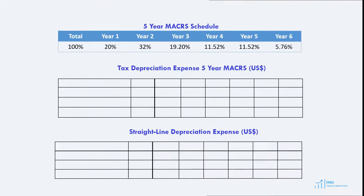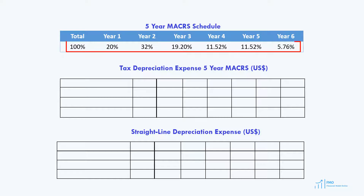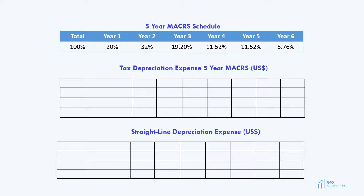Let's take a look at the 5-year MACRS schedule. You can see that the MACRS starts at 20% in year 1, 32% in year 2, and the sum of the percentages equals 100%. Note that the schedule actually lasts for 6 years. Although it is called a 5-year MACRS, this is because it starts in June in the first year — it starts in the mid-year and ends in the mid-year.